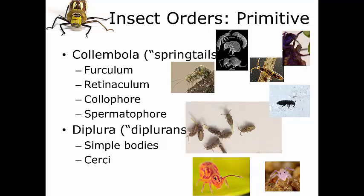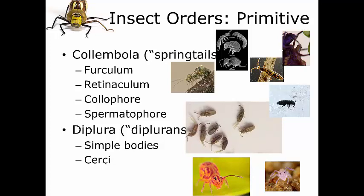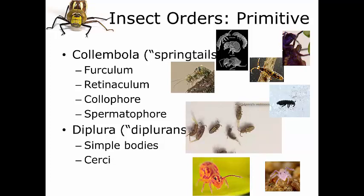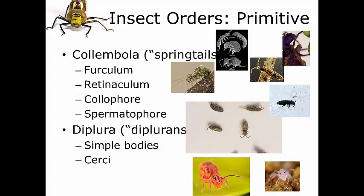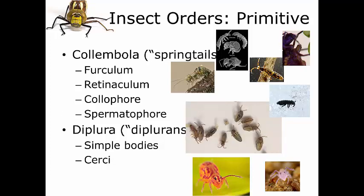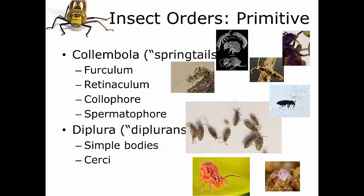Collembola have mouthparts that are adapted for chewing — mandibulate mouthparts. They feed primarily on plant matter, so they can cause damage to gardens. For this reason they can be considered a pest in really large numbers, but we seldom see them in numbers large enough to really cause problems in big agricultural regions. They are useful for environmental testing though — they're used in laboratory tests specifically for early detection of soil pollution. If you have healthy soil, you're going to have Collembola in it. If all the Collembola have died, then you have something in that soil that is killing them off.